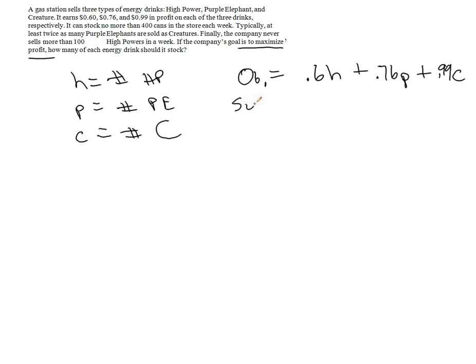And we're subject to the following constraints. It can stock no more than 400 total cans. So the total number of cans must be less than or equal to 400.